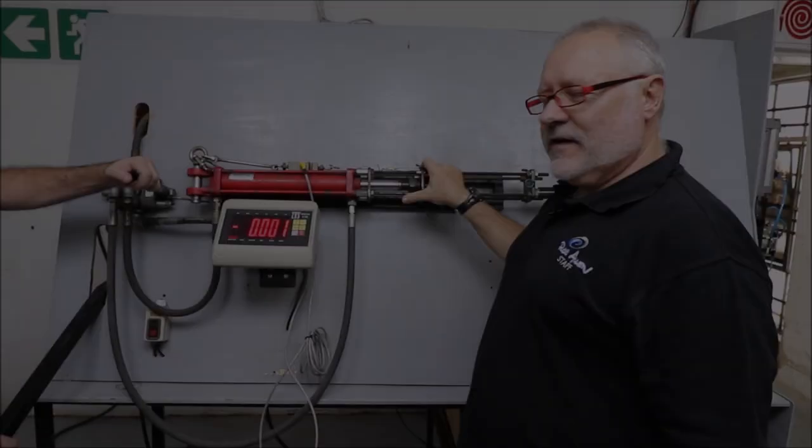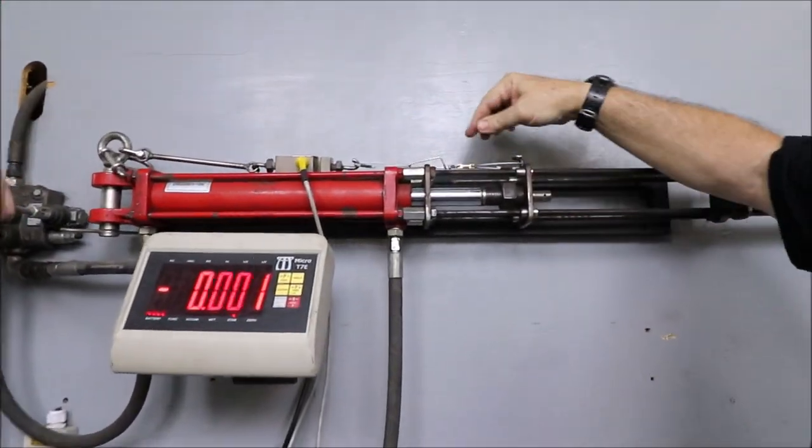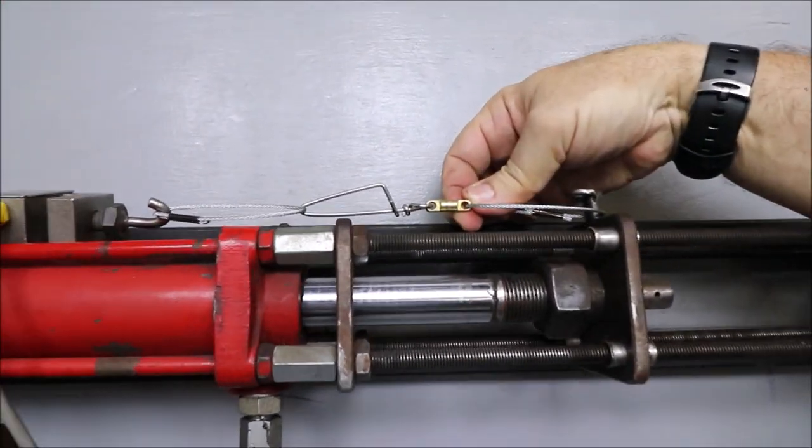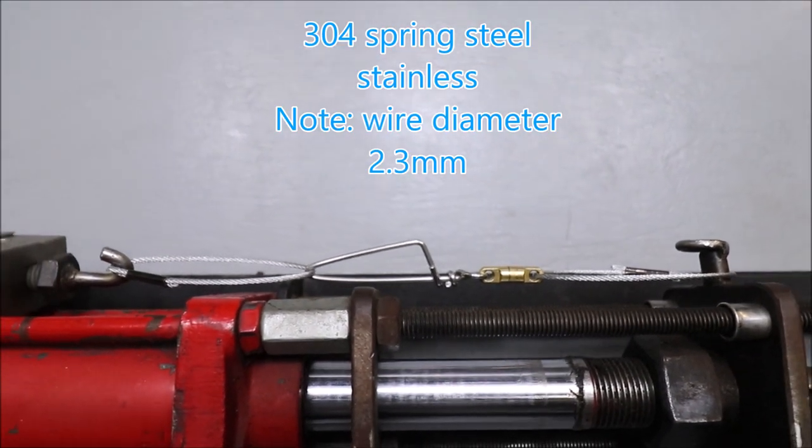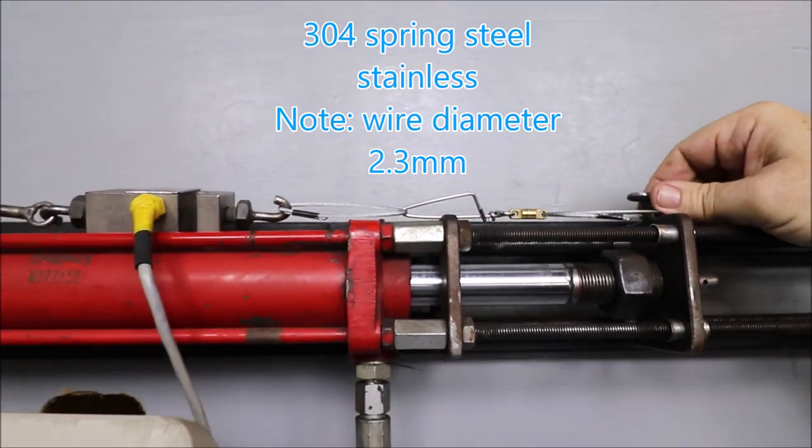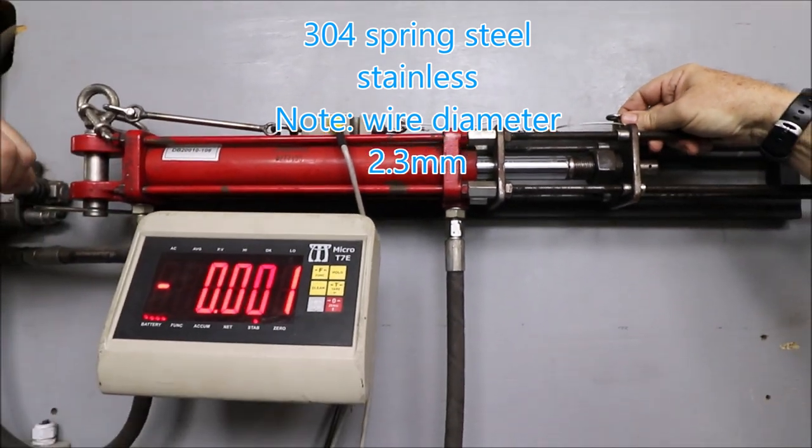We now have our spring steel stainless steel snap clip together with our brass swivel, and it's linked on both sides by two millimeter cable. We're going to stress it now and see what we get up to.